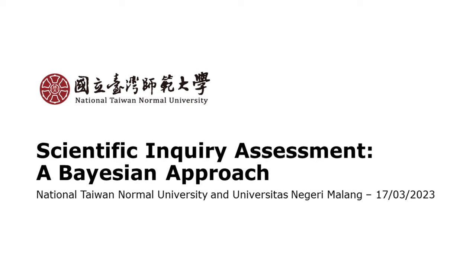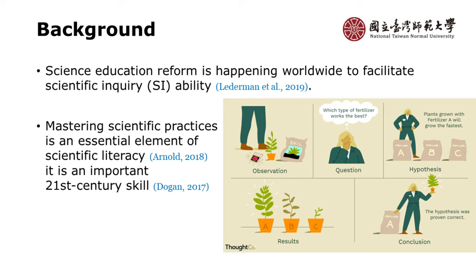Last year we didn't know what Bayesian was, but we tried to understand it and apply it in our research. Recently, a 2019 study says scientific education reform is happening worldwide to facilitate scientific inquiry ability. Mastering scientific practice is now an essential element of scientific literacy and an important 21st century skill. To gain knowledge, you need to observe, question, hypothesize, get results, and draw conclusions — it's a process of knowledge, not just remembering.